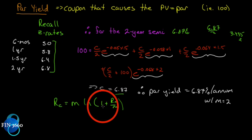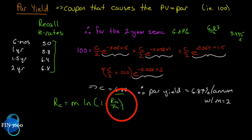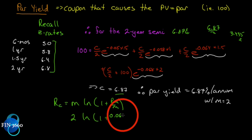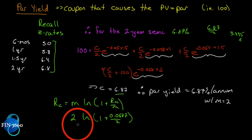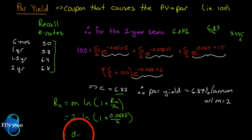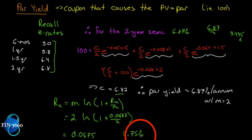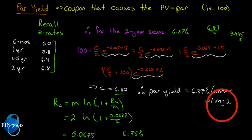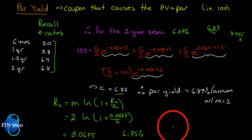To convert to continuous compounding, recall the formula: r_c = m · ln(1 + r_m / m). Here m equals 2 and r_m is 0.0687. Solve: 2 · ln(1 + 0.0687/2). We get 0.0675, or 6.75%. So 6.75% compounded continuously equals 6.87% compounded semi-annually. Continuous compounding always gives a lower rate because with more compounding periods it builds faster.